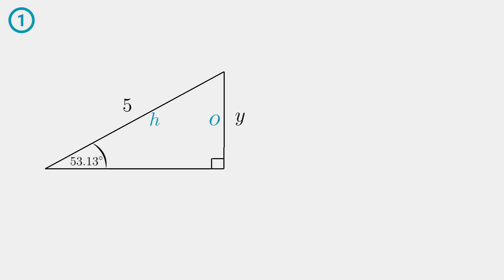Go back to your three trig functions and choose which one will have only one unknown variable. In this case we have an angle, we have the hypotenuse and the opposite side Y. And Y will be our unknown. So we are going to use the sine function.